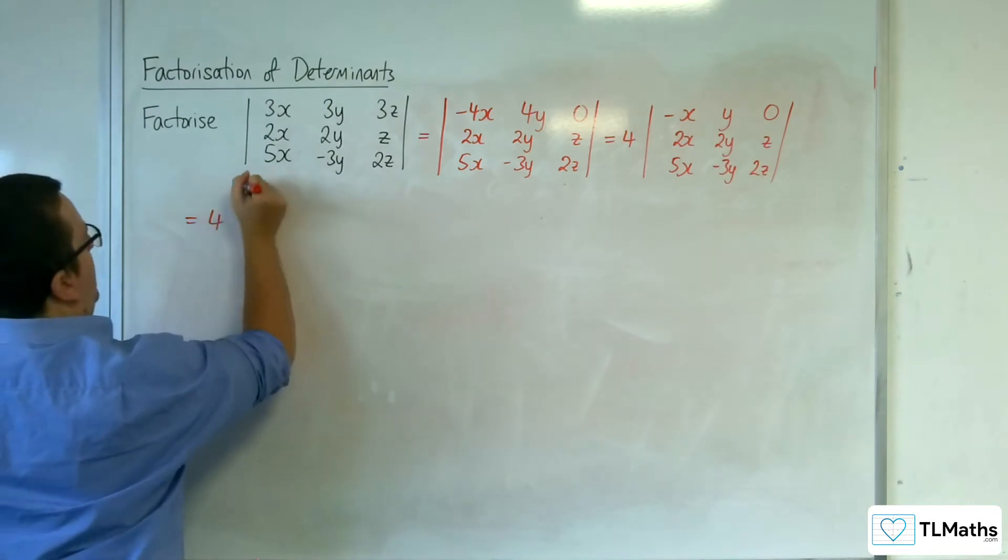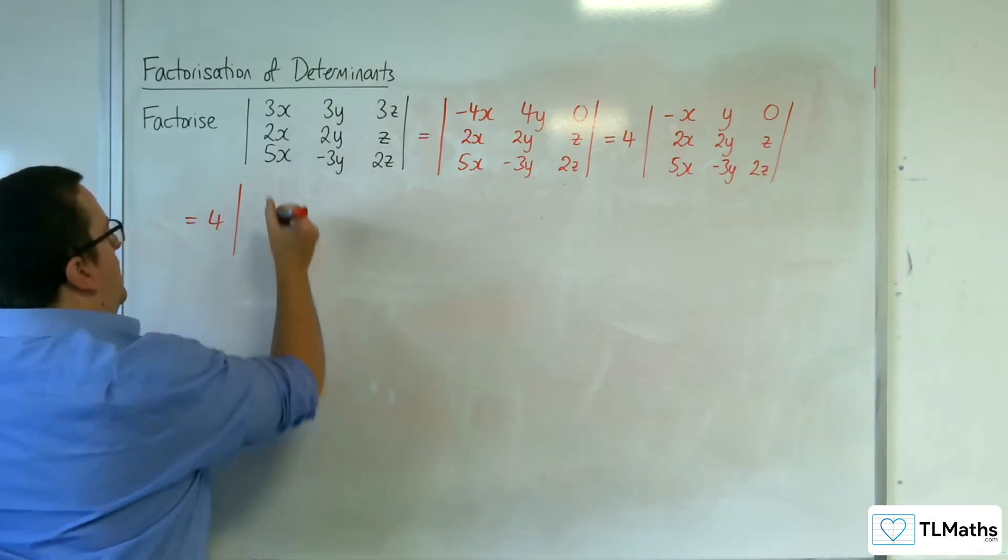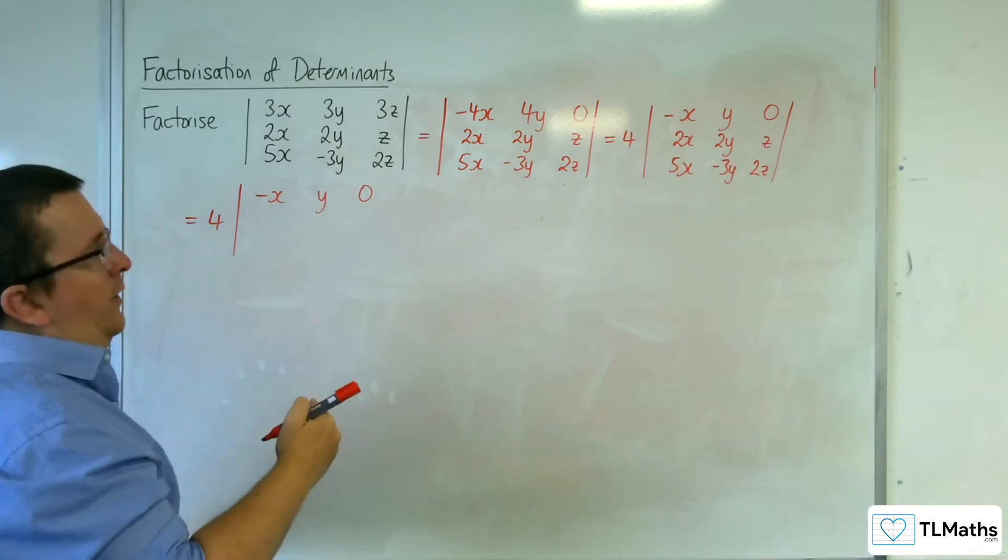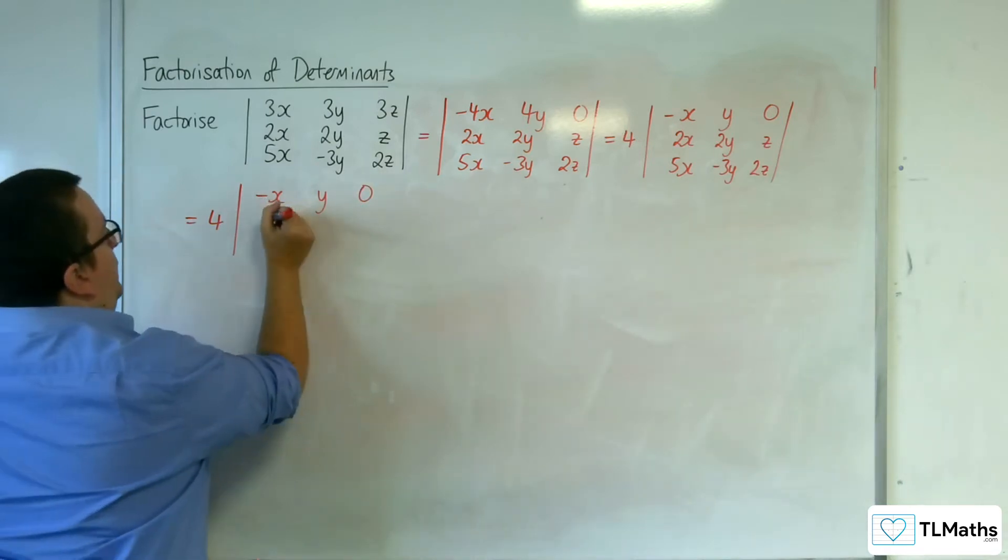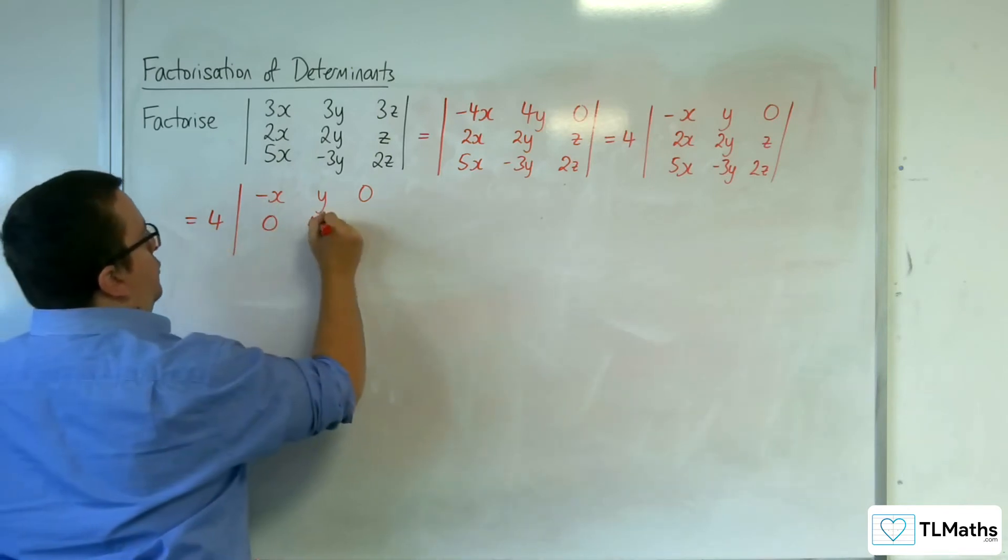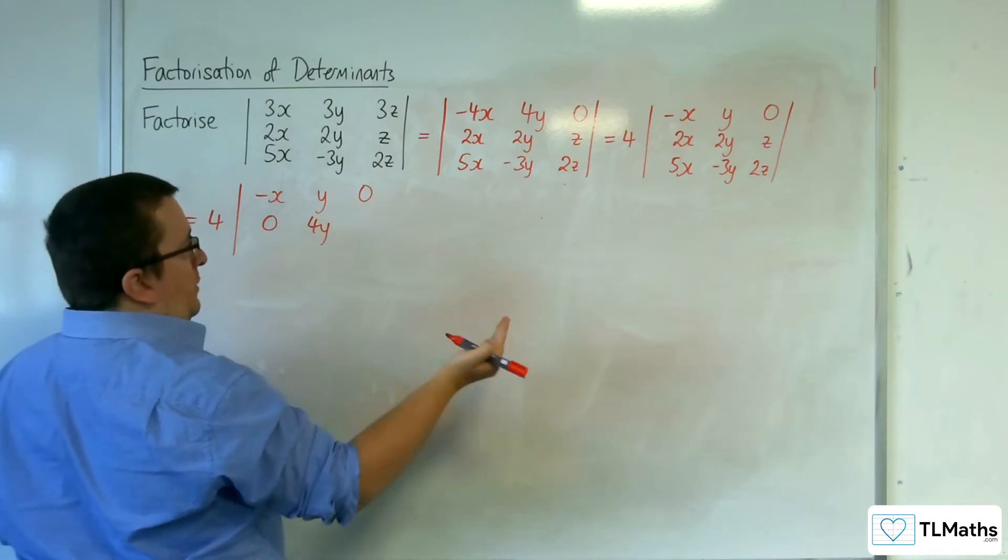So I've still got the 4 on the outside, I've got the minus x, y, 0, so I'm going to have 2x plus minus 2x, so 0, then 2y plus 2y, so 4y, and z plus 2 lots of 0.